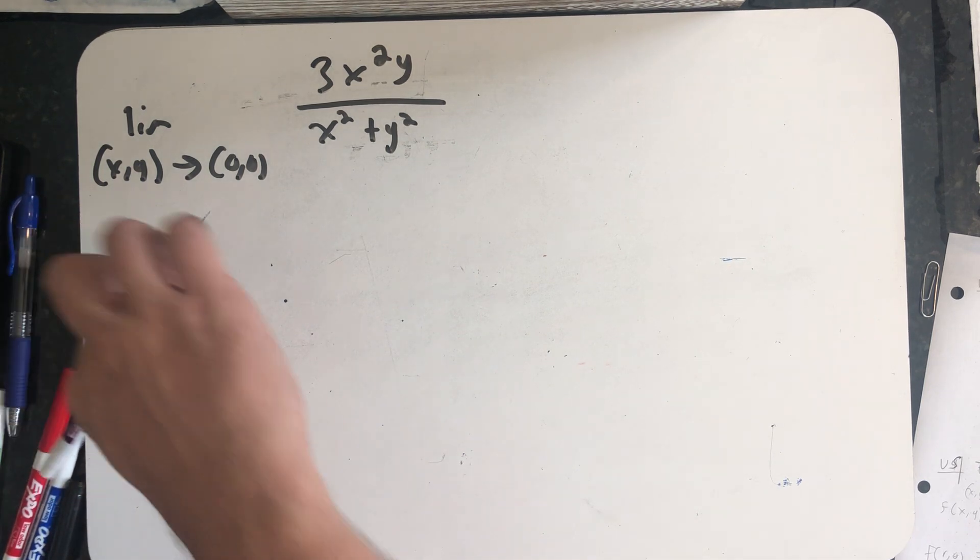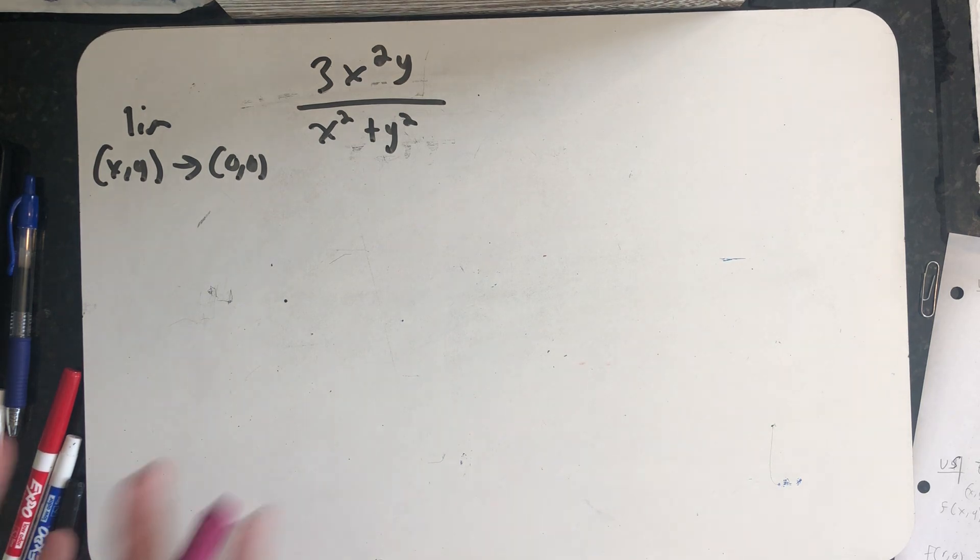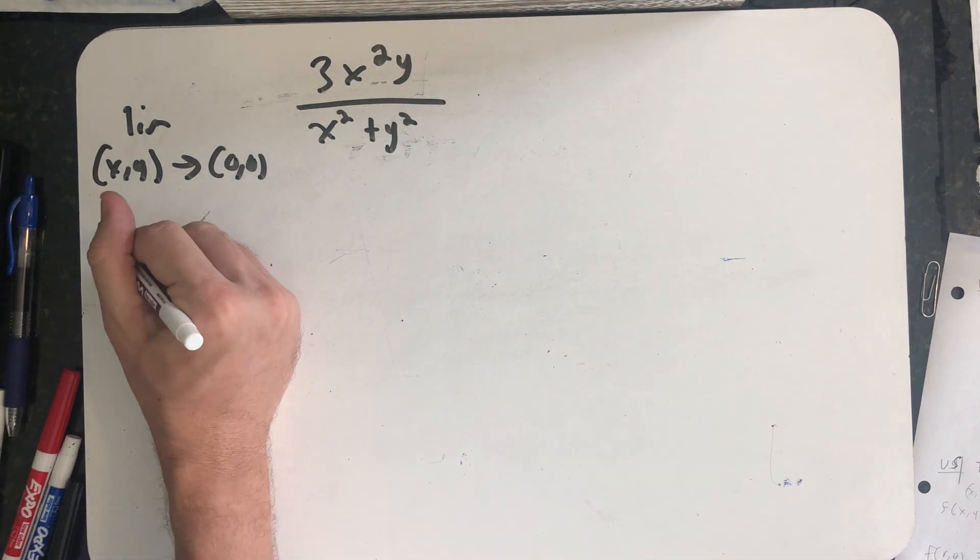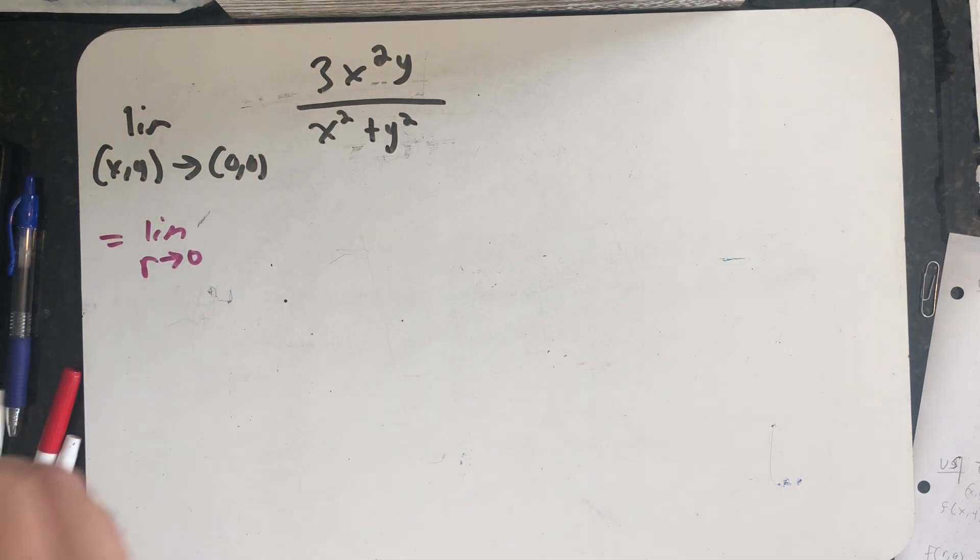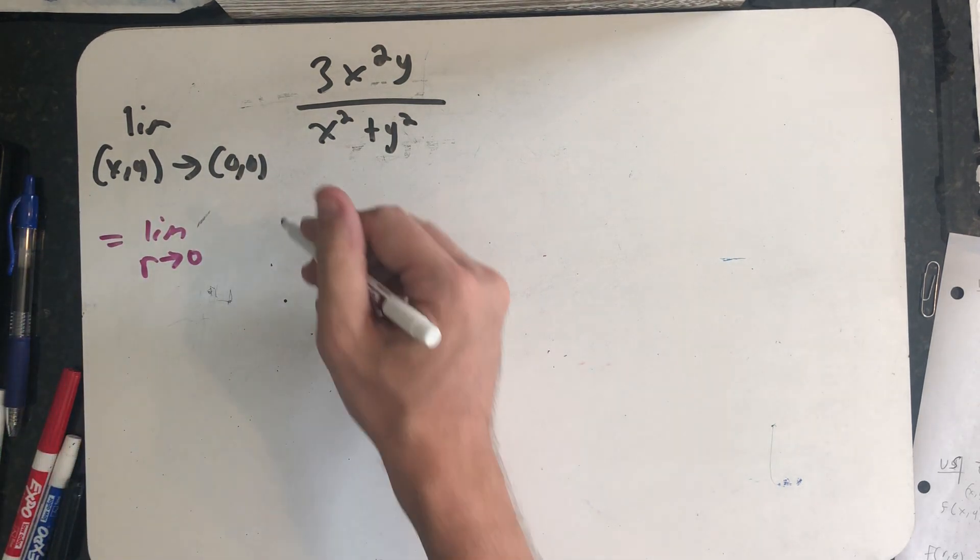Now, that wouldn't tell me the limit exists because I literally can't exhaust all possible paths. And that's where polar coordinates come in, because any path that goes through the origin has an r approaching zero.